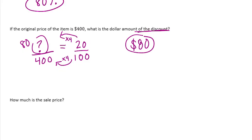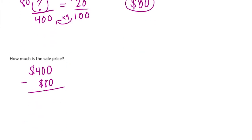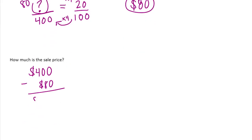The dollar amount of the discount is $80. If the original price was $400 and it's discounted $80, we subtract those to get $320. So the sale price is $320.